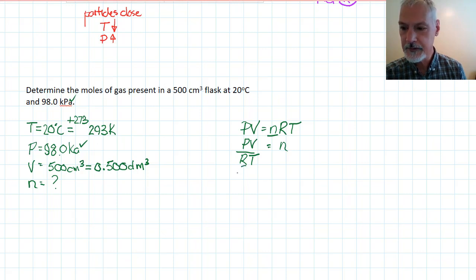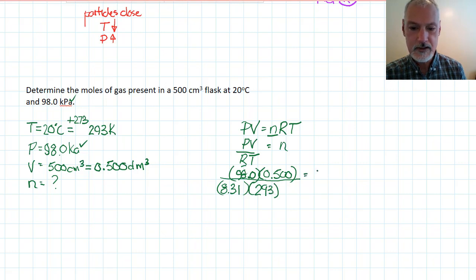So, now the units are set to go for using 8.31, the value for R. So, we can substitute in our values. Pressure, 98.0. Volume, 0.500. R, the gas constant that's in your IB data booklet, 8.31. And finally, our temperature, 293 Kelvin. And that'll then solve for n.